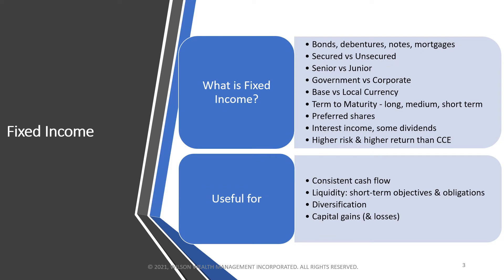Fixed income, if we recall, is basically bonds, debentures, notes, mortgages. It's a contractual arrangement that you enter into — you lend a business money, and in return they agree to make periodic interest payments to you. At some future date, they agree to repay the principal.